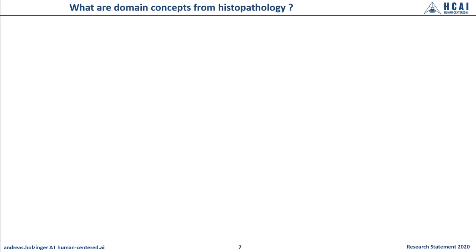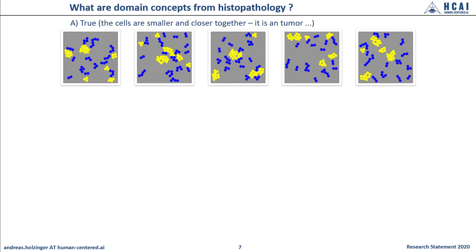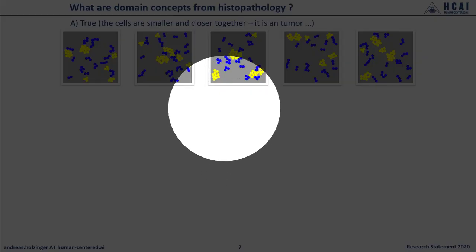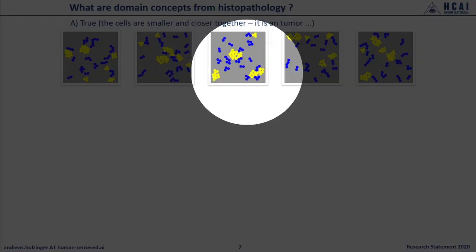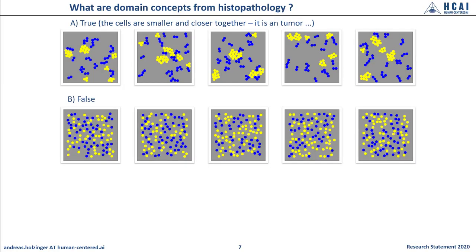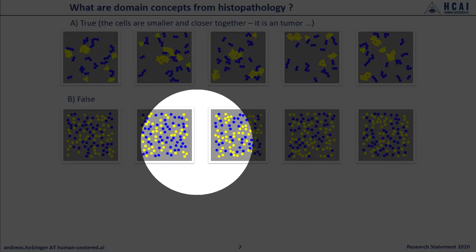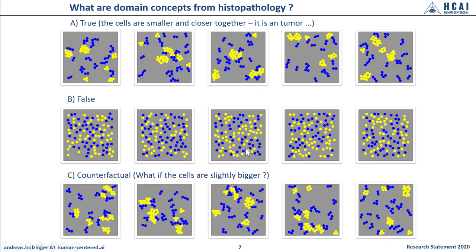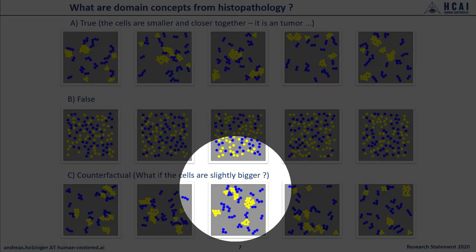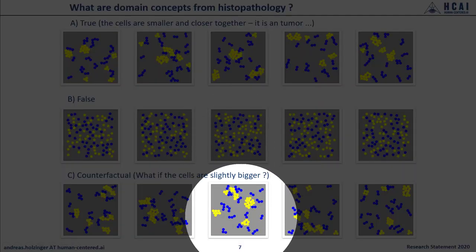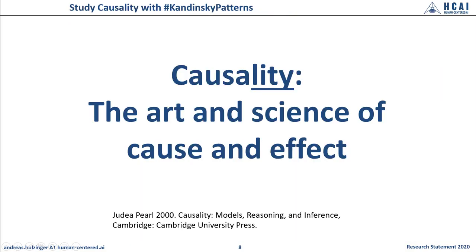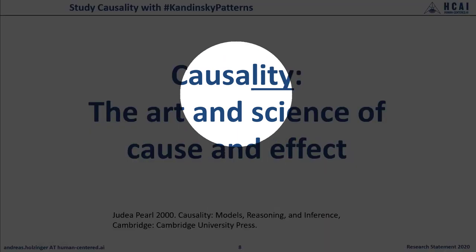Within our Kandinsky Patterns experimental environment we can build such concepts along with the ground truth. For example, here a true statement: the cells are smaller and closer together — it's a tumor. Or a false statement: here a completely random pattern. Or a counterfactual statement: what if the cells are slightly bigger? Our Kandinsky Patterns are extremely helpful because this enables us to study causality.